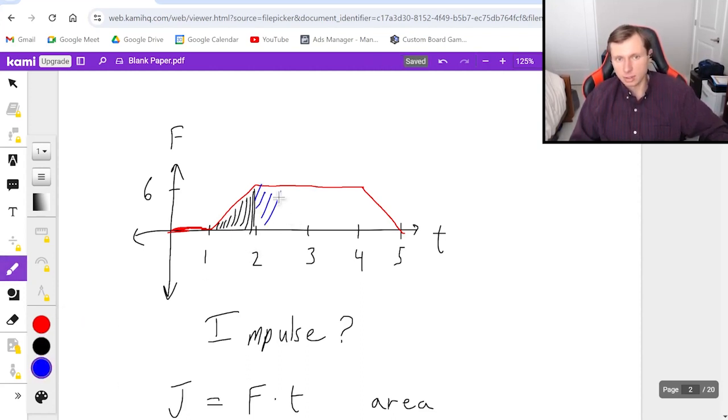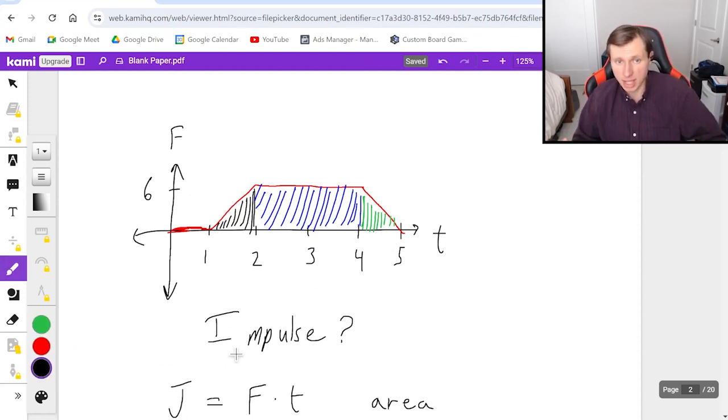The black triangle, the blue rectangle from two to four, and then the green triangle at the very end. And we just got to find these three areas and add them together.